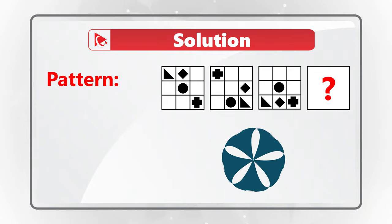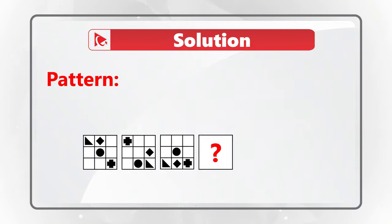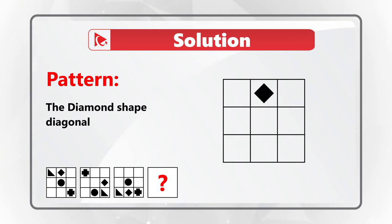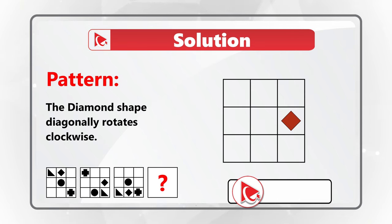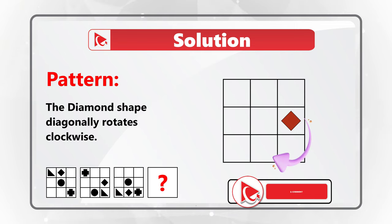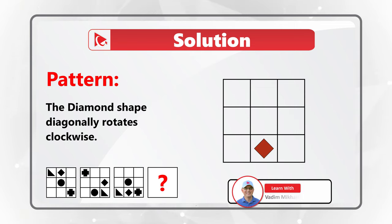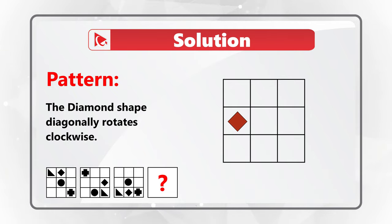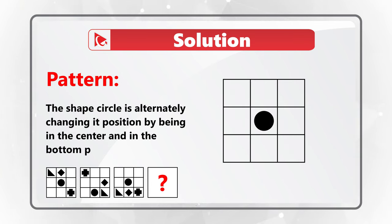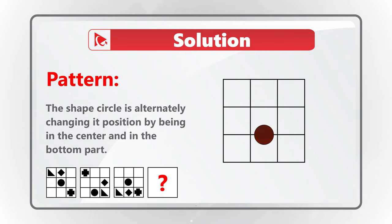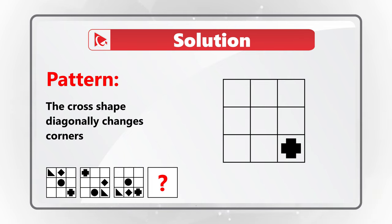In the first square, the diamond shape is in the upper middle section. In the next square, the diamond rotates 90 degrees clockwise and is in the middle row to the right. In the next square, the diamond is in the middle column at the bottom. We can assume that in the fourth shape, the diamond would be in the middle row to the left. Additionally, the circle changes position to the bottom middle column, and the cross shape diagonally changes corners.